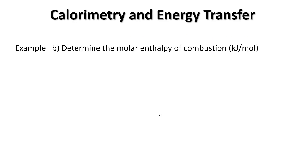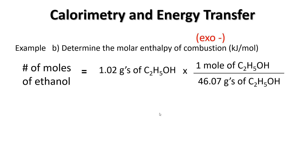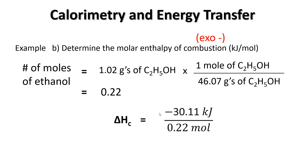Let's recalculate the earlier combustion example from a different point of view. We know combustion means our answer is going to be negative. We've got 1.02 grams of ethanol, one mole weighs 46.07 grams, divide it out and we get 0.22 moles. Now our 30 kilojoules from earlier becomes negative 30 kilojoules, because we're looking at it from the system's perspective. So when we do our calculation, we get negative 136.8 kilojoules per mole — the system's energy has dropped.